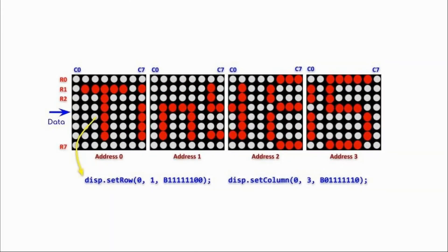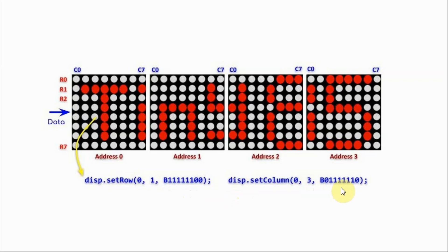By using these functions within the LED control library, we can display any pattern on the module. For example, if we want to display the text Tiny85 and represent the letter T, then we need to use two specific statements and add them in the sketch.